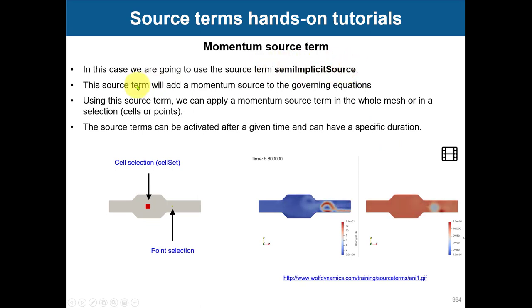What we are going to do is add this source term called semiImplicitSource, which is equivalent to adding a momentum source to the equations. We're going to add it in a cell selection and in a point selection. This is the outcome here. You see that you will have, in this cell selection, you are adding like a negative velocity, and here you see that you're adding also velocity and momentum at an angle.